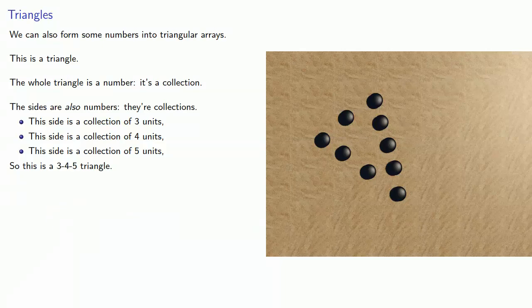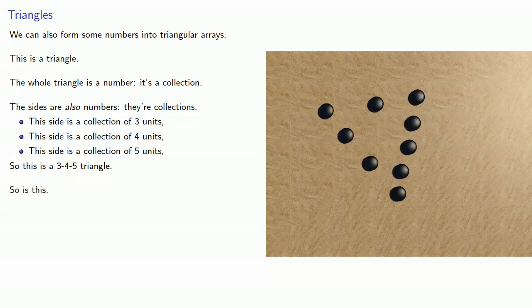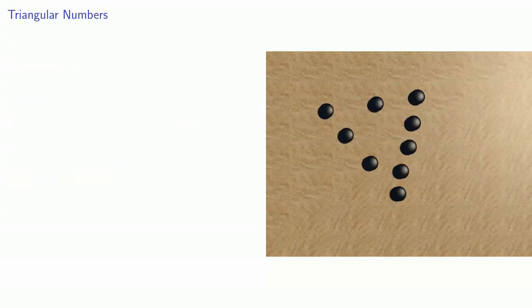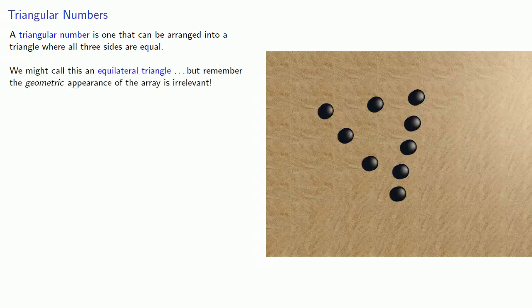What's important to realize here is that geometric configuration is subject to some variation. So while this is a three, four, five triangle, so is this. Now if you think about that, almost any number can be put into some triangular array. So let's try and be a little bit more specific. We'll define a triangular number as one that can be arranged into a triangle where all three sides are equal. And we might view this as an equilateral triangle, but remember the geometric appearance of the array is irrelevant.